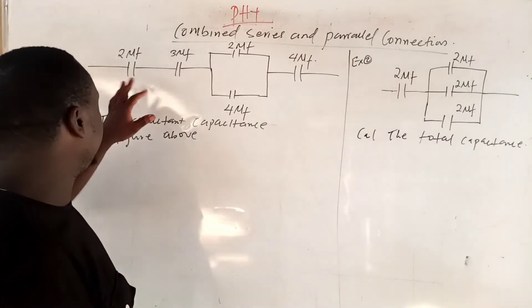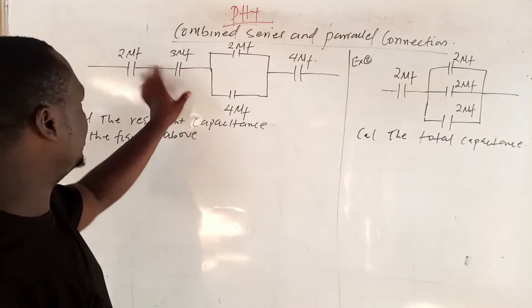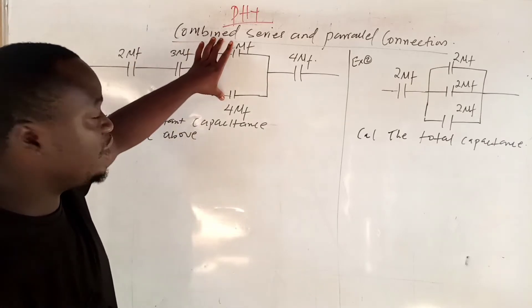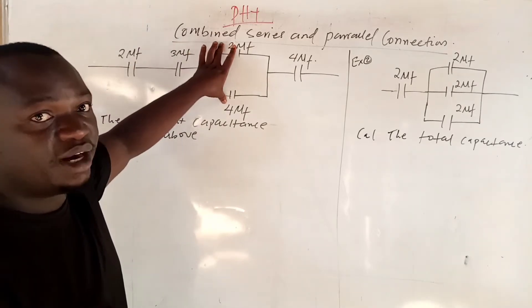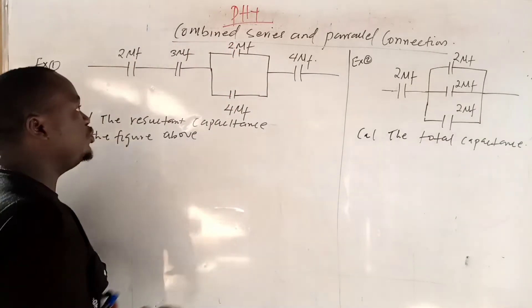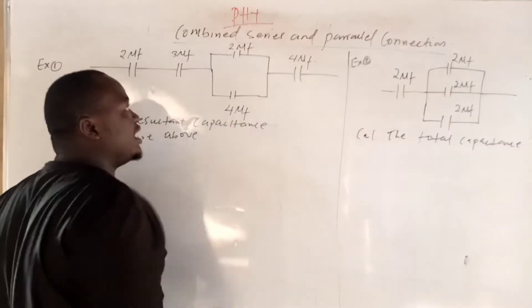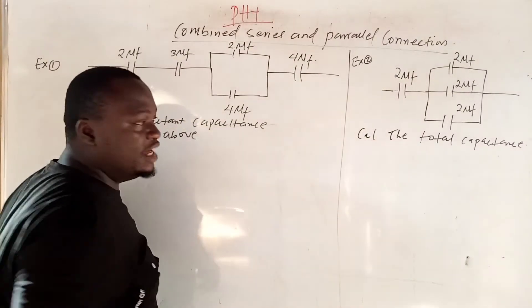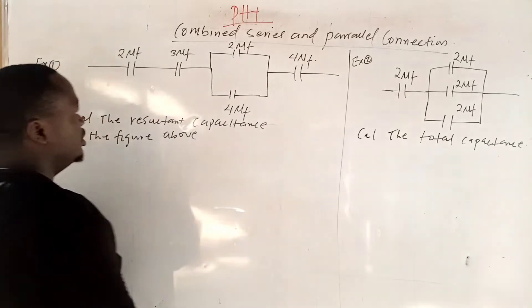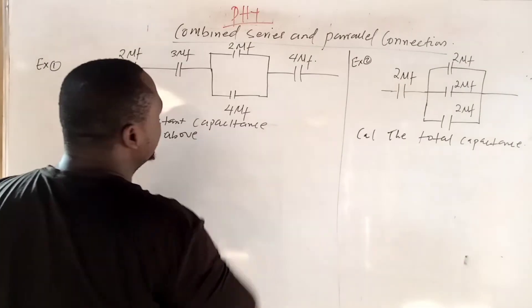You can see that these two capacitors are connected in series, and this place is in parallel. The easiest way to do this: remember, capacitors in parallel you add them — you sum them together. So if you sum the parallel ones, this will give you 6.